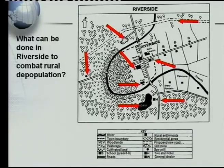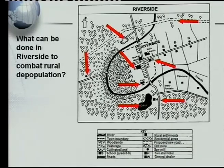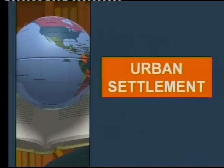Just have a look at the arrows we've got here. I'm sure very few of you could see, when we ask what can be done in Riverside to combat rural depopulation, that this question is quite easy if you just look at the key and ask yourself: can I use the school, the sawmill, the hotel, and so forth? Then you can prepare an answer where you can easily get full marks. So please remember: look at your key to get to your answers.